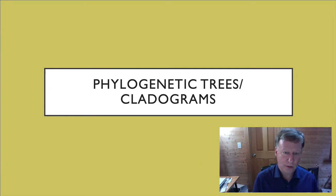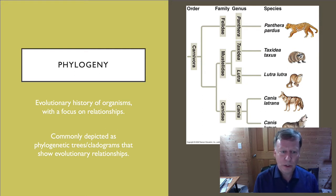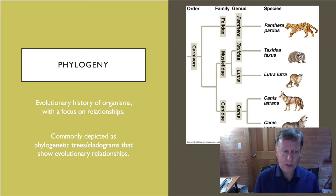So we're going to run through this — some of it will be review, but some of it will also be new, so please pay attention. These are the important points. Phylogeny is looking at the evolutionary history of organisms with a focus on their relationships, and these relationships are commonly depicted as phylogenetic trees, or cladograms, that show these evolutionary relationships.